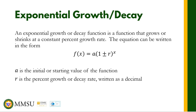As usual, 'a' is our initial or starting value of the function. If there is an exponential decay, we use minus — so plus for growth, minus for decay. That means the quantity (1 ± r) is between 0 and 1 when we have exponential decay, because we subtract the rate from 1, making it less than 1. On the other hand, if (1 + r) is greater than 1, we have exponential growth.